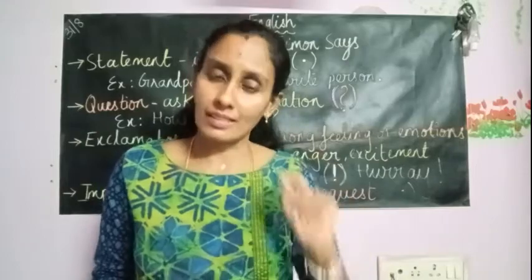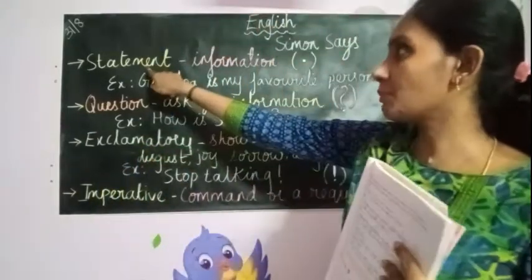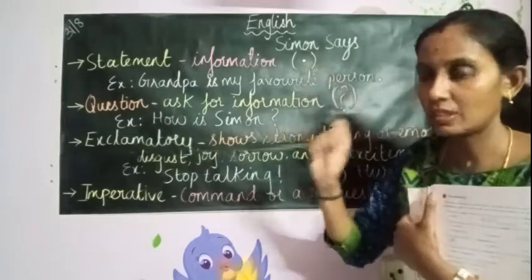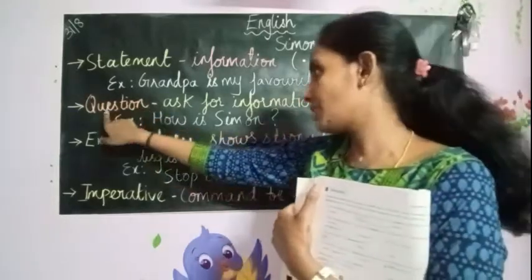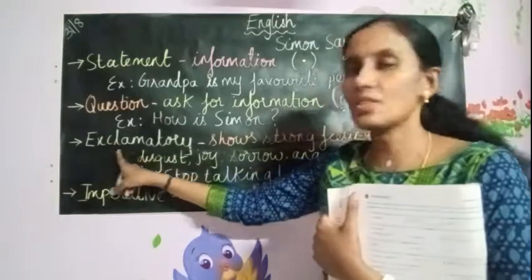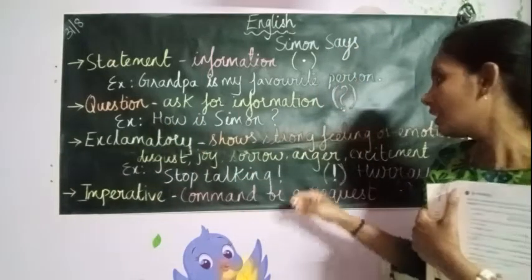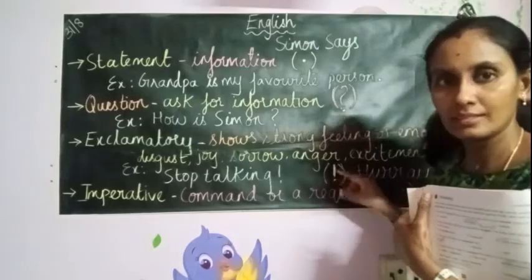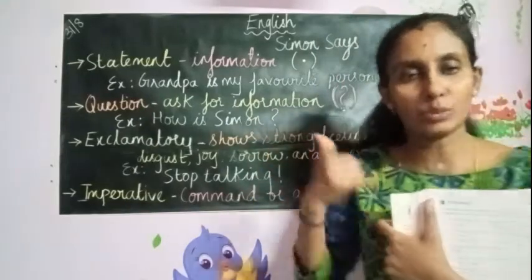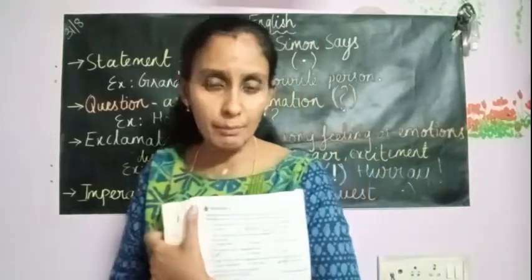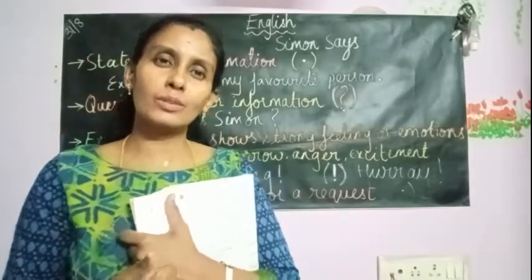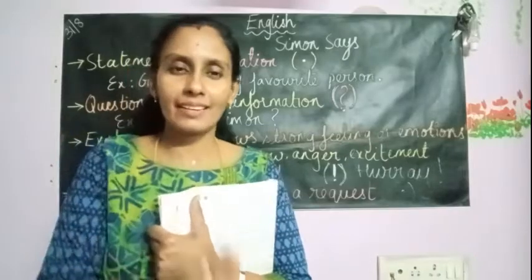Let me repeat the four kinds of sentences once again. First: statement — gives information, ends with a full stop. Second: question — asks for information, ends with a question mark. Third: exclamatory — shows strong feelings and emotions, ends with an exclamation mark. Fourth: imperative — of two types: a command where I order you to do something, and a request where I please someone to make them do something for me.